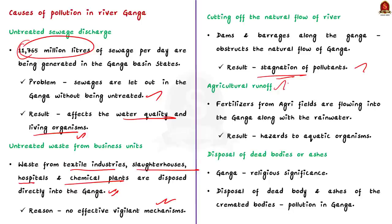The fourth cause is agricultural runoff. In the Ganga basin most farmers use tremendous amounts of fertilizers to get better yields. During rainy seasons these fertilizers are washed off and ultimately end up in the river, causing eutrophication in the Ganga and affecting the overall health of the river. The last major cause is disposal of dead bodies and ashes into the Ganga for religious reasons.